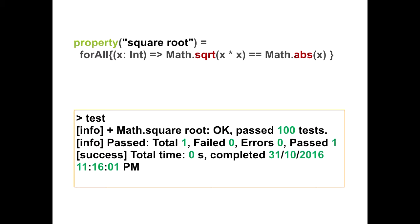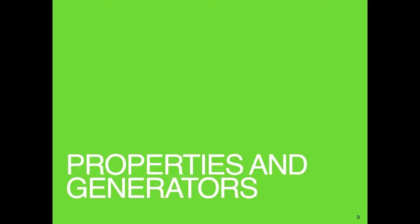The point is: once you write properties, you don't actually need to think about the range of values or edge cases for the properties. The tool will tell you, and you'll discover them. Property-based testing has two important components: properties — these assumptions or theorems — and generators. Generators are the things which actually provide the values or examples for your properties.